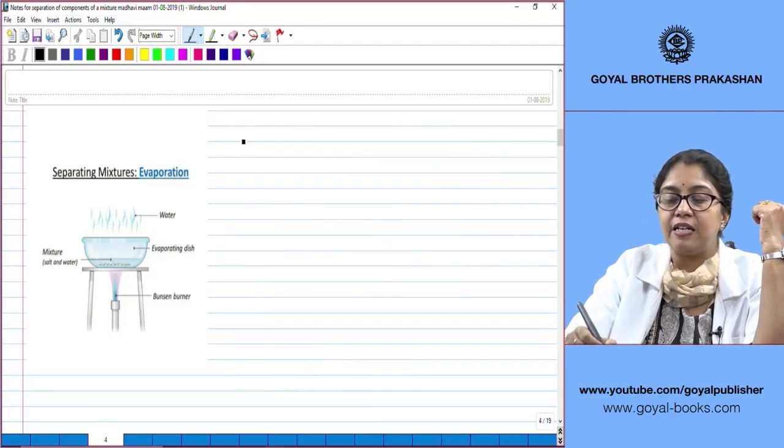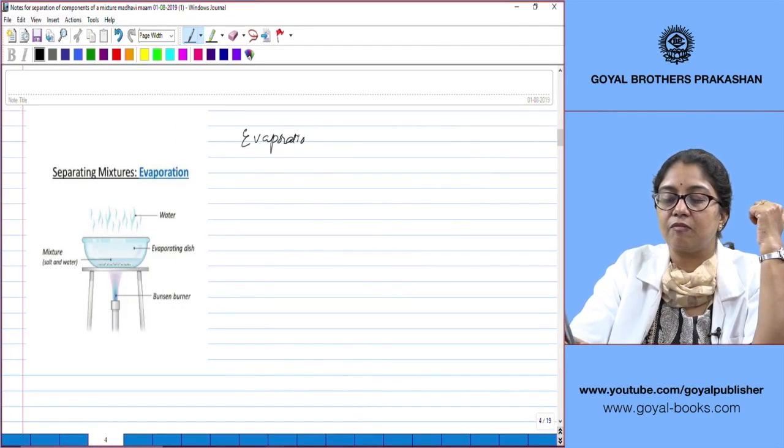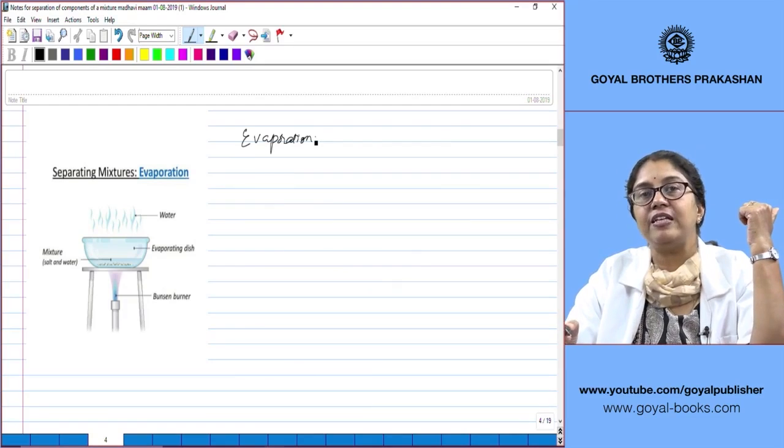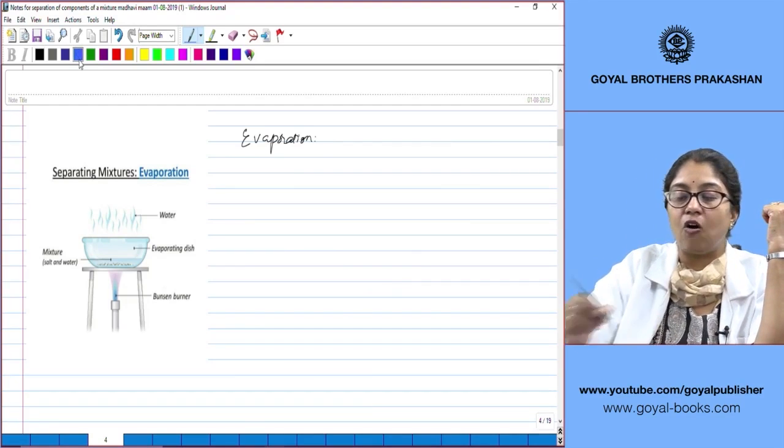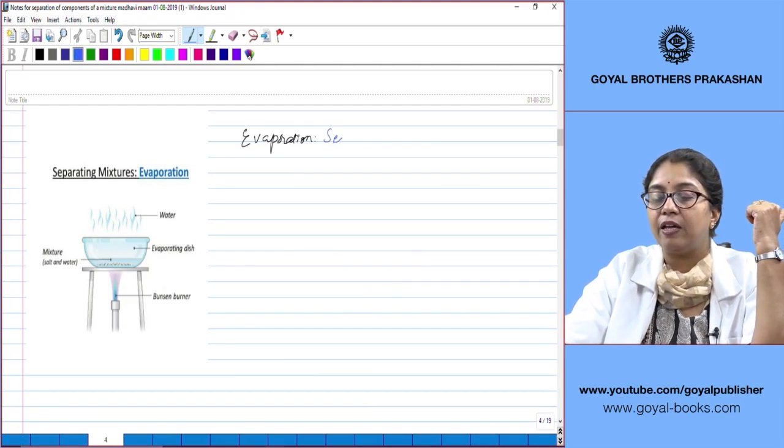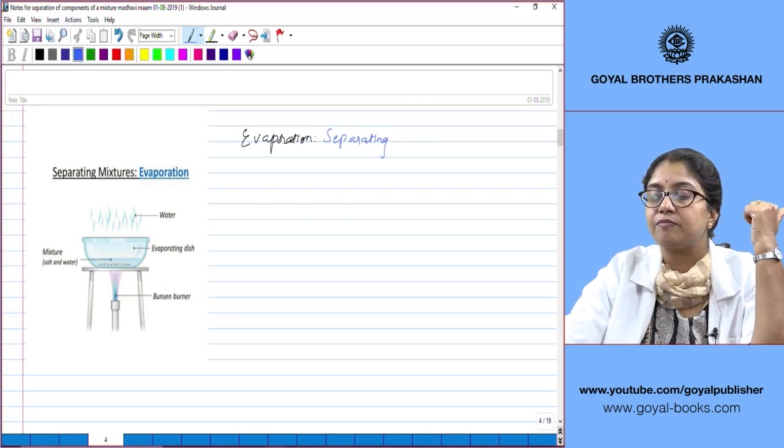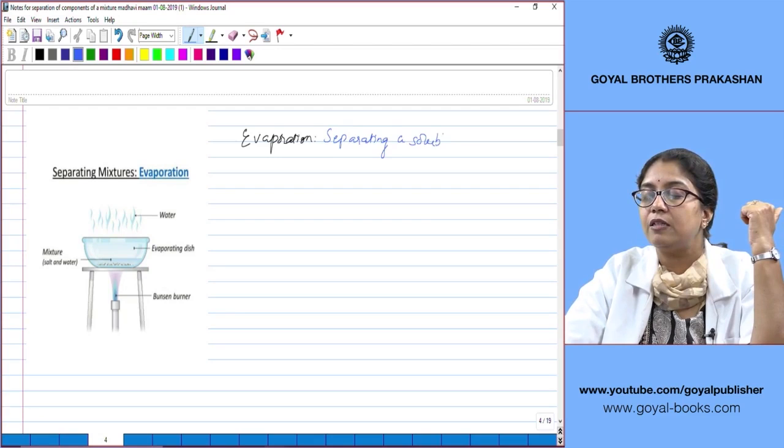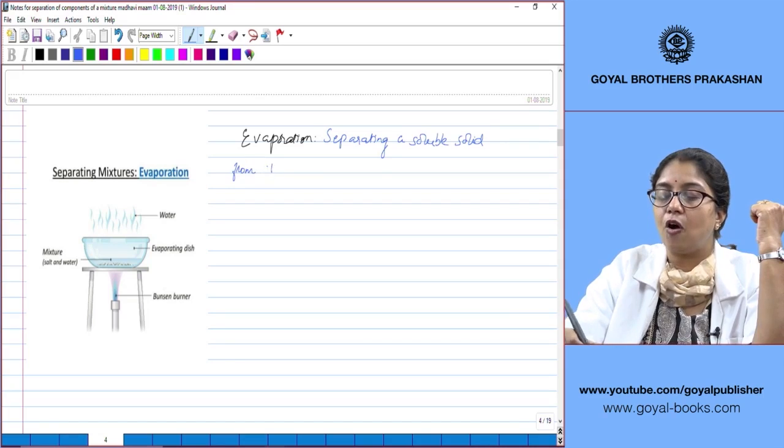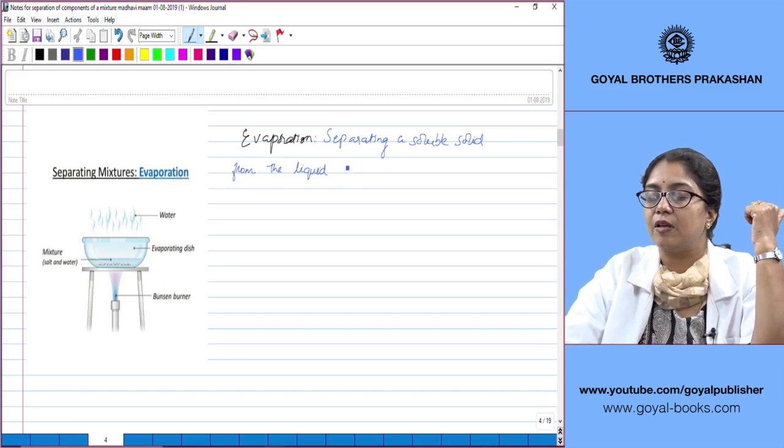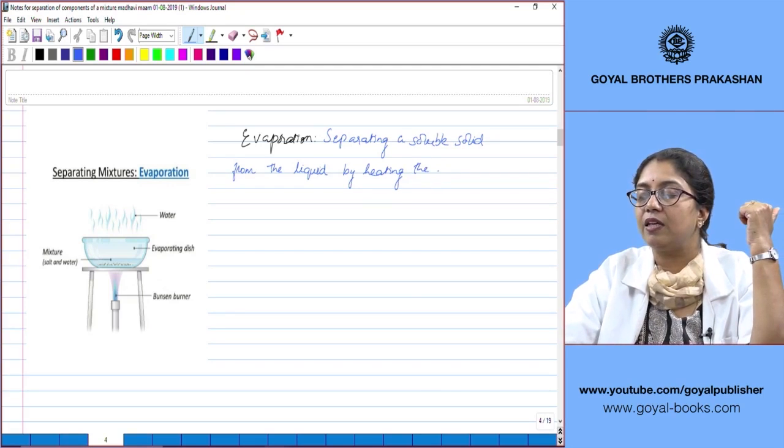Coming to the next technique: evaporation. Evaporation is a technique wherein you are separating a soluble solid from the liquid by heating the liquid.